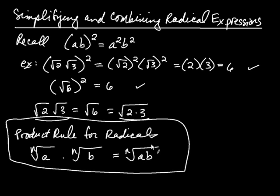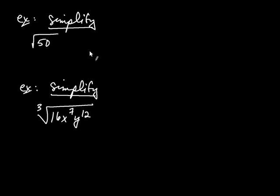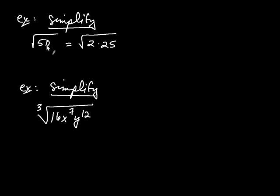Let's see an example of the product rule in action and how we can use it to simplify radical expressions. Let's simplify the square root of 50. Now, 50 is not a perfect square — perfect squares would be 4, 9, 16, or 25. But what I can do is write 50 as a product where one of the factors is a perfect square. So I can write 50 as 2 times 25.